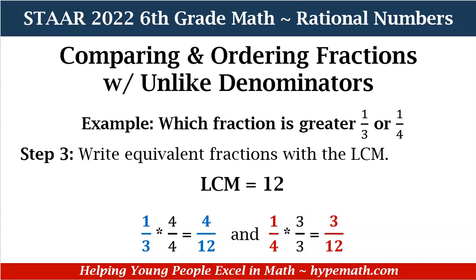Now for step 3, we need to write equivalent fractions using the LCM. Let's start with 1 third. Since our least common denominator and least common multiple are the same thing, our least common denominator is 12. I need to ask myself: what number multiplied by 3 is equal to 12? And whatever number that is, I need to multiply the numerator and the denominator by that number. 3 times 4 is equal to 12, so I am going to multiply my numerator and my denominator by 4. 1 times 4 is equal to 4, and 3 times 4 is equal to 12.